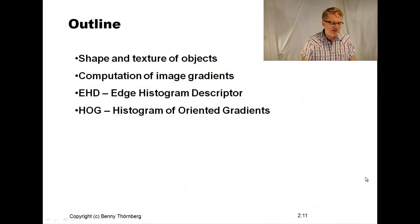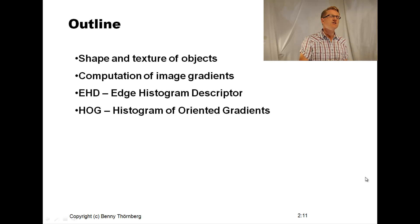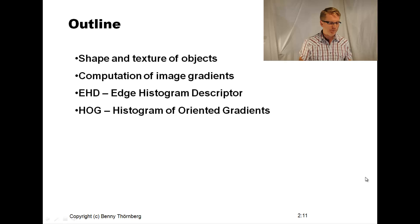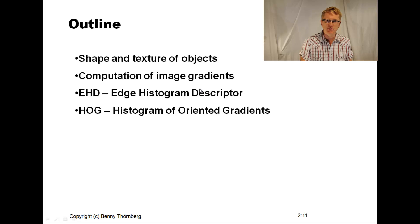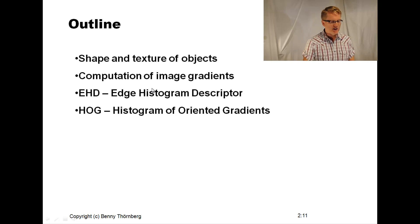The outline of my talk today is that I will firstly show you a couple of example images to convince you about the importance of texture and the shape of objects in order for both a human and for a machine to recognize objects and distinguish between them. I will continue to discuss the computation of image gradients and the use of the well-known Sobel operator, and then go into the use of descriptors — a compact mathematical descriptor to capture the information from texture and shape, both in terms of edge histogram descriptor and the more complex histogram of oriented gradients.